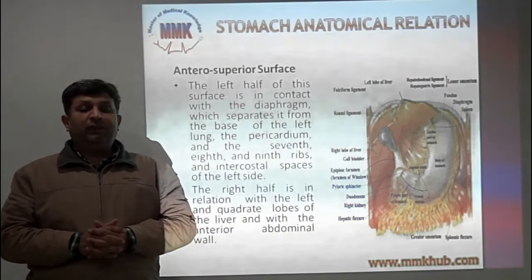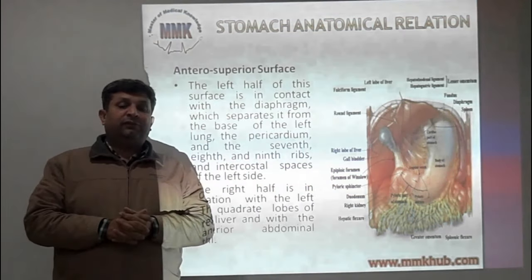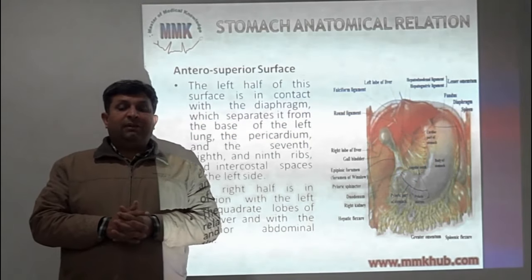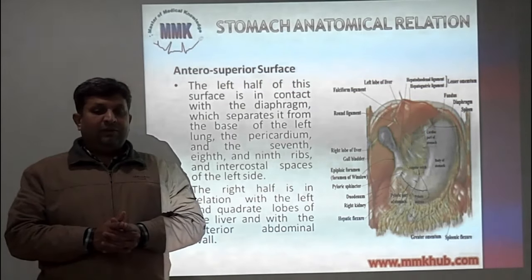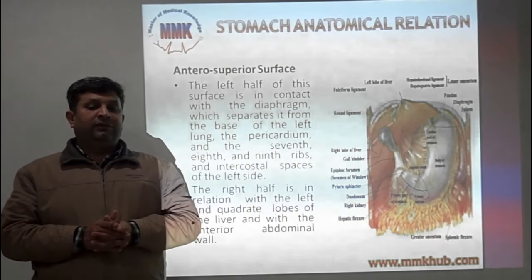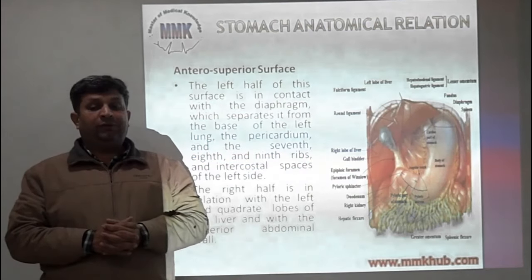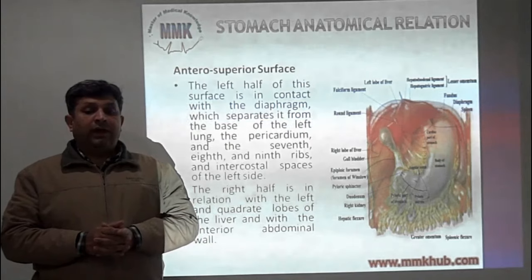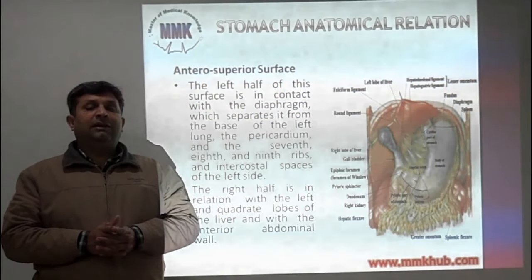The anterior superior surface of the stomach: the left half is in contact with the diaphragm, which separates it from the base of the left lung, the pericardium, and the 7th, 8th, and 9th ribs and intercostal spaces on the left side. The right half of the anterior superior surface is in relation with the left and quadrate lobes of the liver and with the anterior abdominal wall.